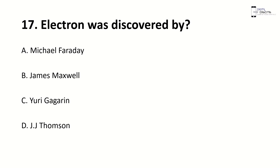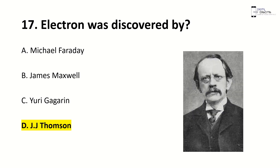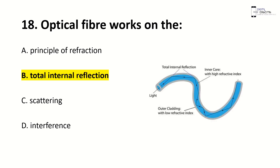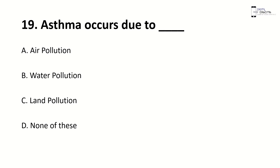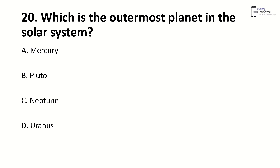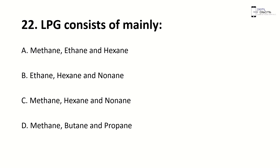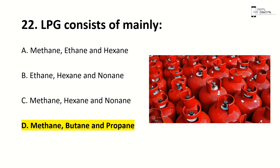Electron was discovered by — right answer is D, J.J. Thomson. Optical fiber works on — right answer is B, total internal reflection. Which is the outermost planet in the solar system? Right answer is C, Neptune. Severe deficiency of vitamin D results in — right answer is B, rickets. LPG consists mainly of — right answer is D, methane, butane, and propane.